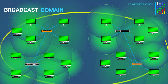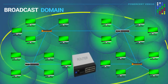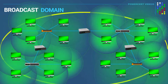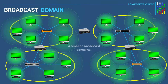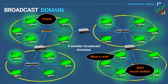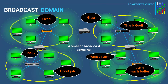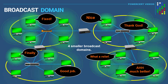By strategically placing three routers on this network, we have created four smaller broadcast domains. Now each computer can only receive broadcasts in their own broadcast domain, because routers will not let broadcasts go past them. Thank you for watching this video on the difference between collision domains and broadcast domains. Please subscribe and I will see you in the next video.